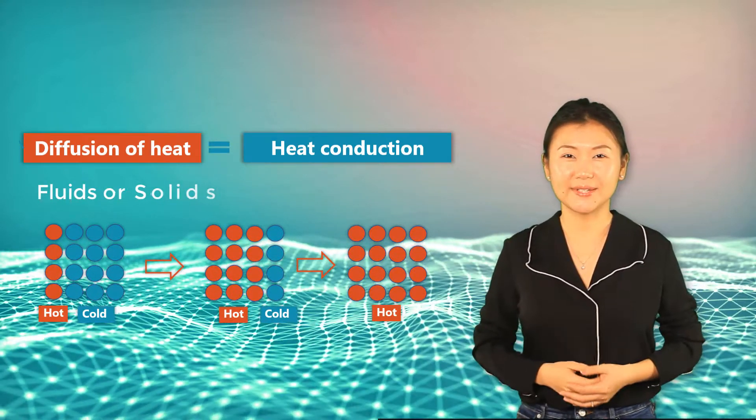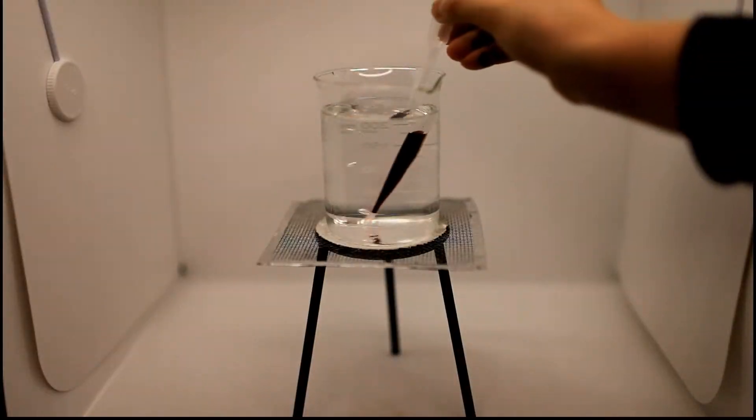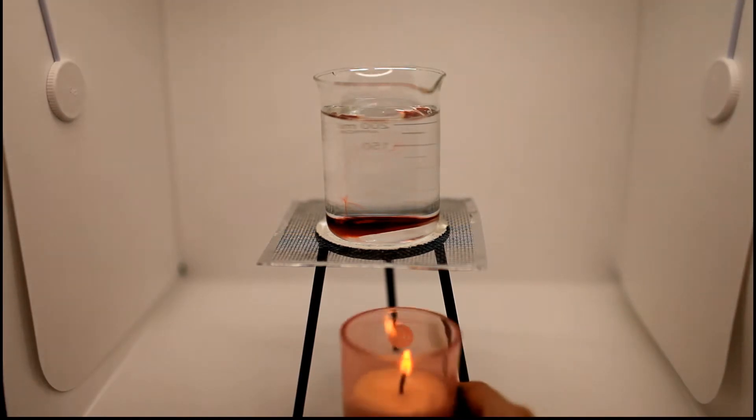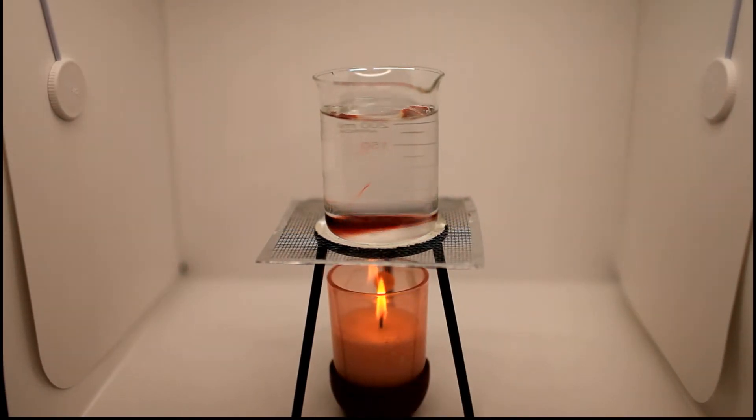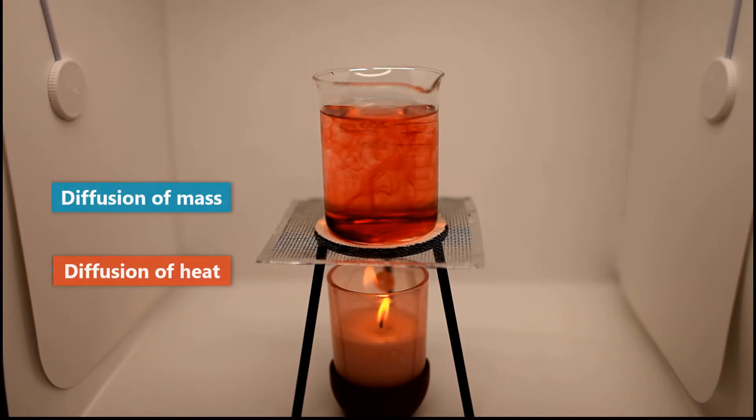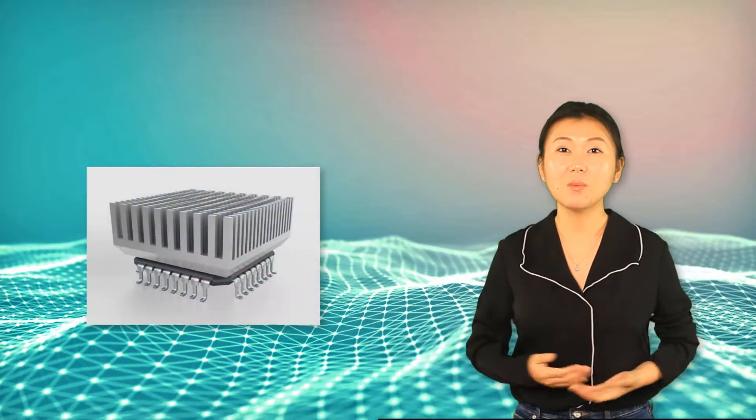Let's do an experiment. If we drop red ink into a glass of clear water in room temperature and then heat up the water, you'll find that the ink in the bottom will start to move up, accompanied by the top clear water falling down. Eventually the color becomes more and more uniform for the entire glass of water. In this process, both diffusion of heat and diffusion of mass occur simultaneously.